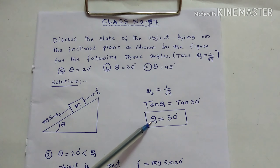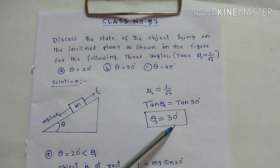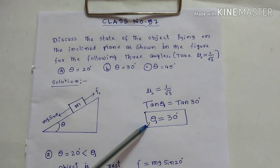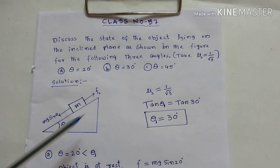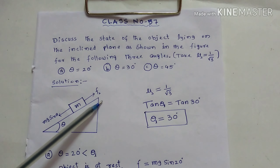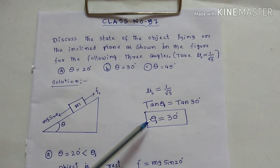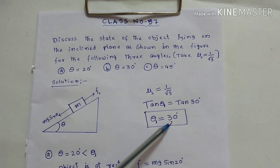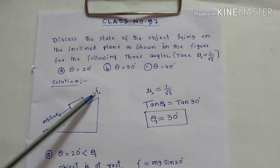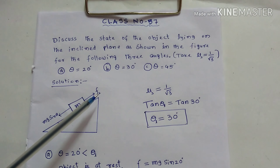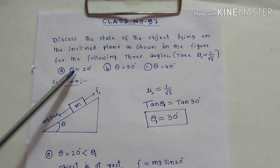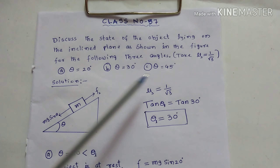Theta L equal to 30 degrees is the fixed angle for this set of surfaces — the surface of the object and the surface of the inclined plane. For theta L equal to 30 degrees, the force of static friction is maximum. Now in the question, three angles are given: theta equal to 20, 30 and 45. We will compare the given angles with theta L.